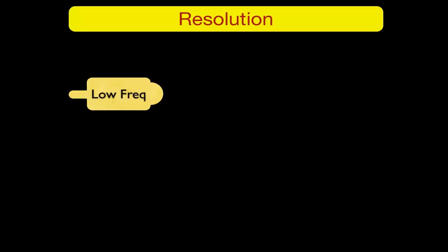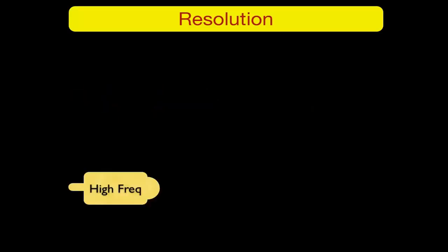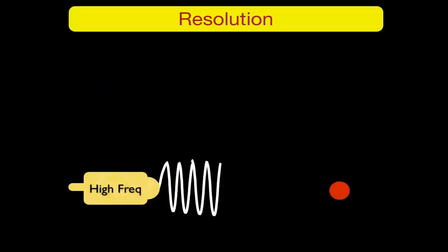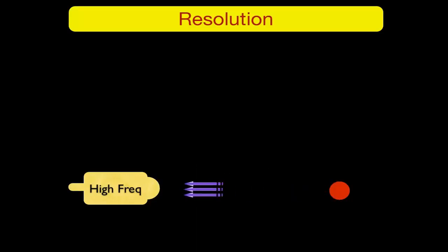One important factor is frequency. With a low frequency probe and a small object, there is a good chance the sound wave will miss that object. On the other hand, with a high frequency probe and the same small object, there is less chance of missing it, producing a reflection back to the probe so the object is displayed on screen.